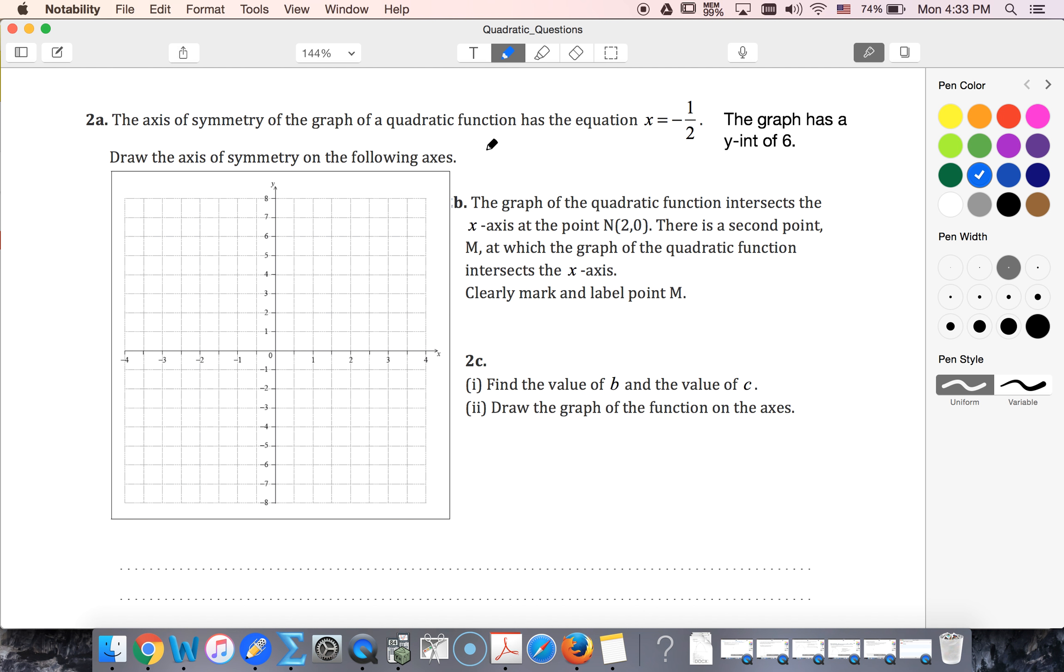Alright, for this one we've been told the axis of symmetry is x equals negative one-half, and a y-intercept of—oh I think this is supposed to be a y-intercept of negative six actually. So let me just fix this. Okay, x equals negative a half. So draw the axis of symmetry here. Here is my negative half, there's my axis of symmetry.